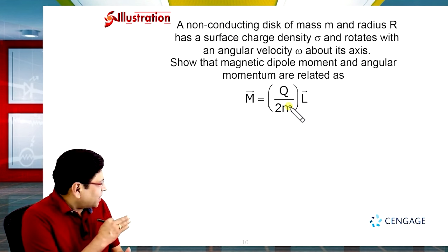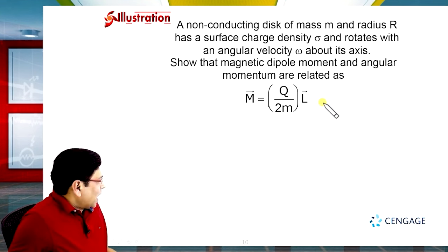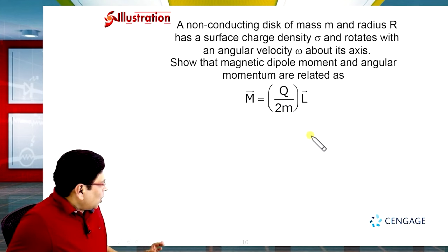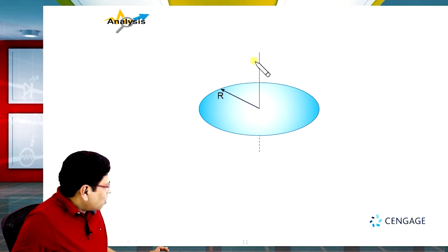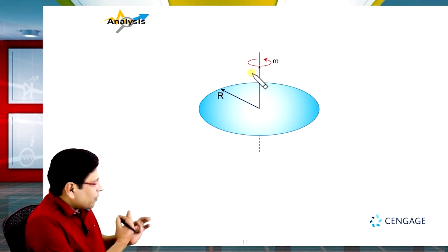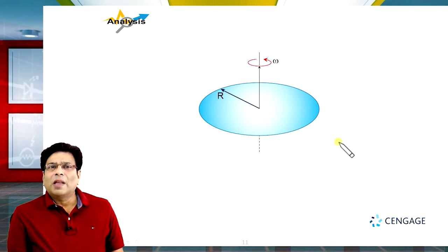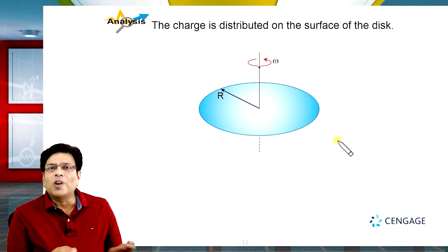First, we will verify this disk structure. If we talk about magnitude, m divided by L equals q divided by 2m. Let us take a disk of radius R rotating about its axis passing through the centroid. The angular velocity of rotation is omega. If we observe from the top, the disk is rotating in the counter-clockwise sense. The charge is distributed uniformly at the surface of the disk, and the surface charge density is sigma.